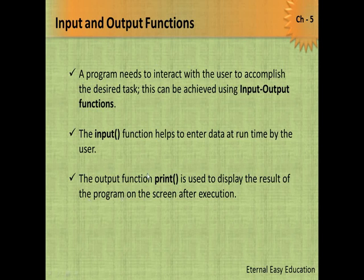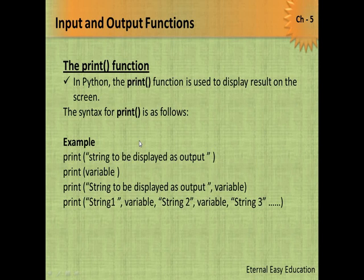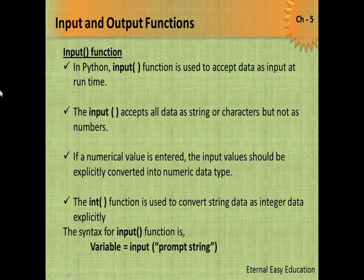The output function print is used to display the result of the program on the screen after execution. The print function can be written with a string to be displayed as output within double quotes, or with a variable to print its value, or with both a string and a variable separated by a comma.